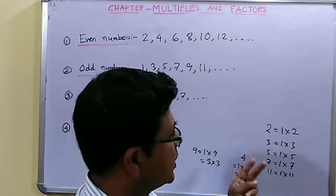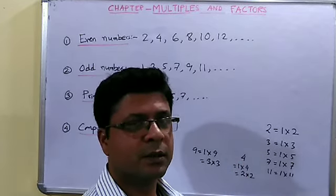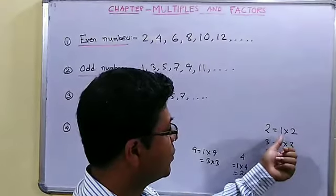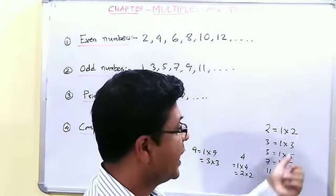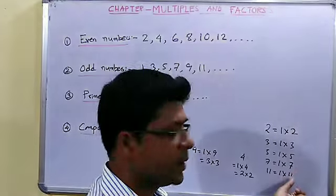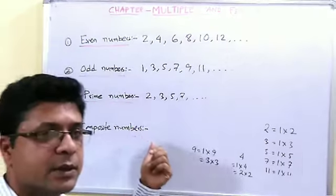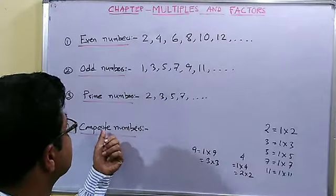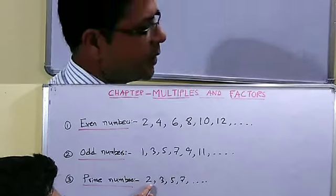The numbers which have exactly two factors — 1 and the number itself — are known as prime numbers. What is the smallest prime number? It is 2.